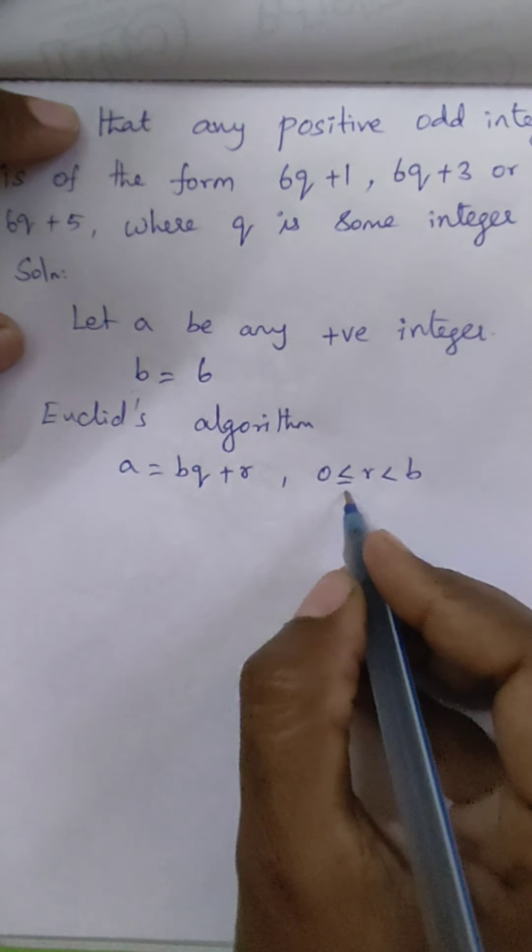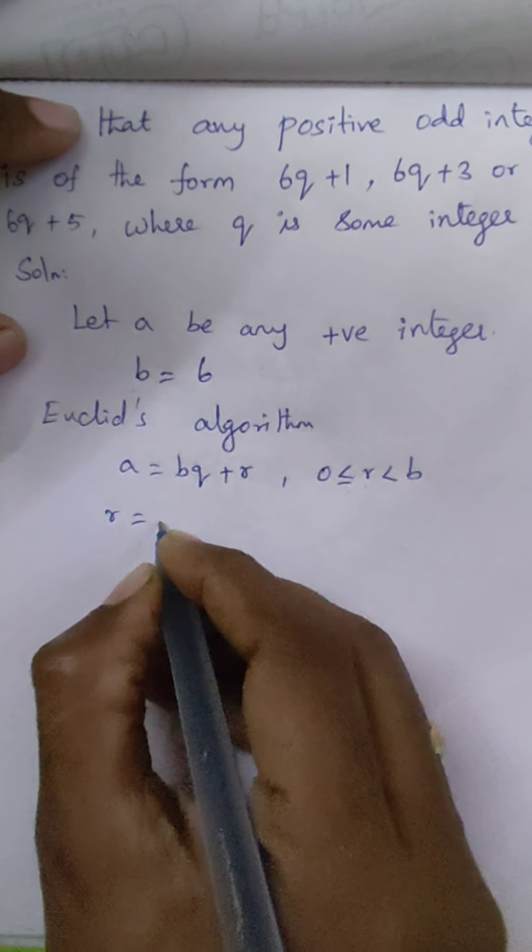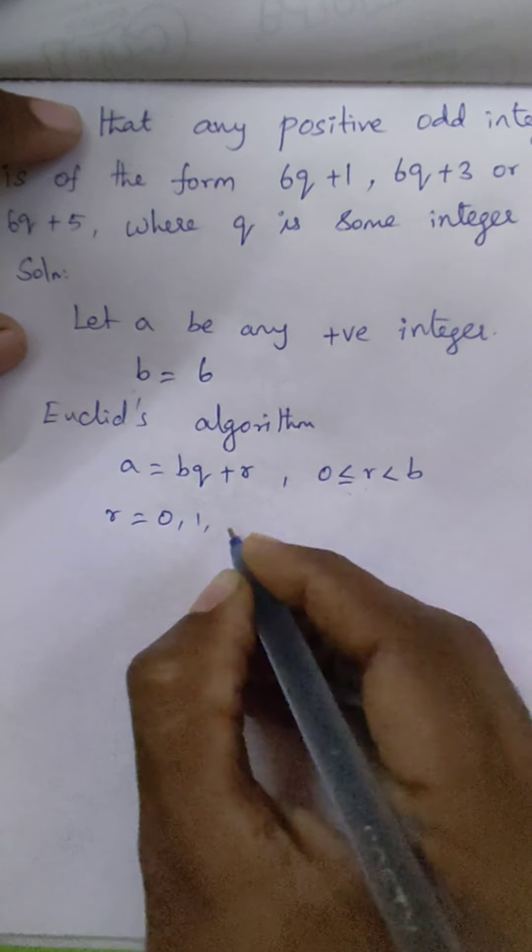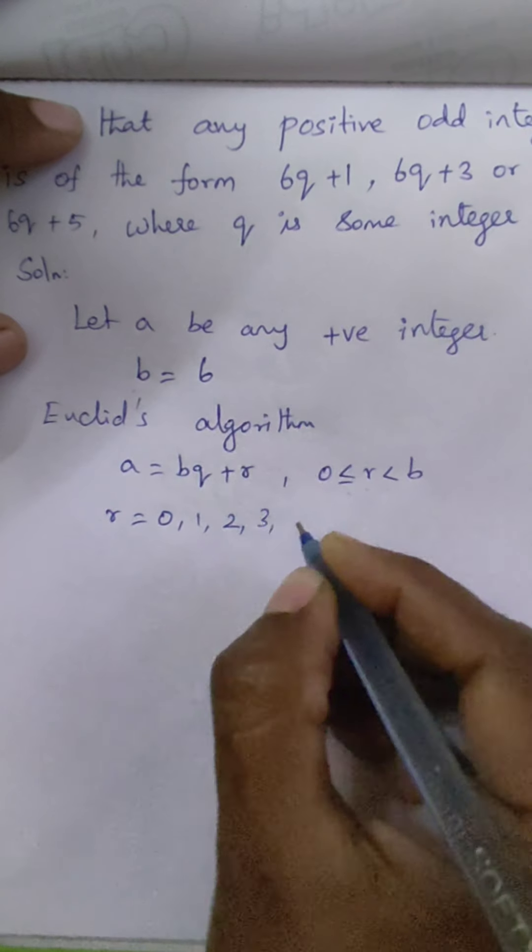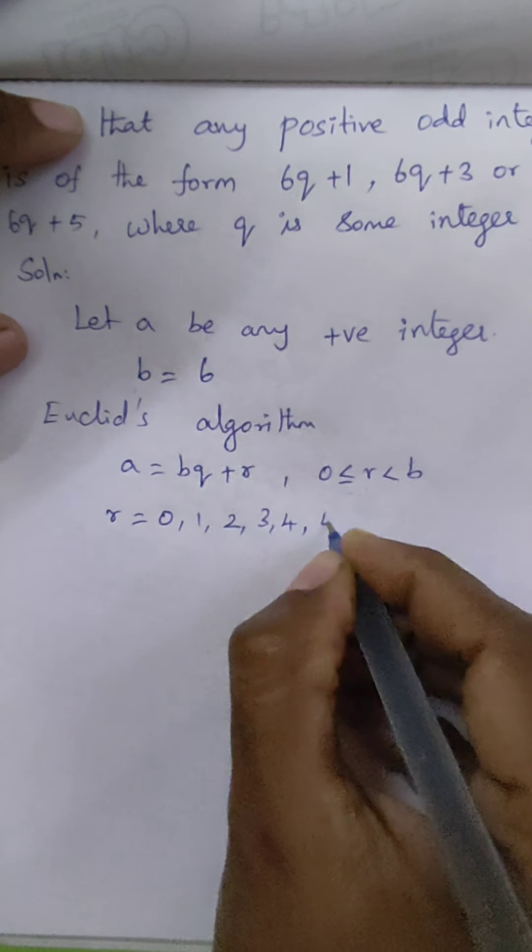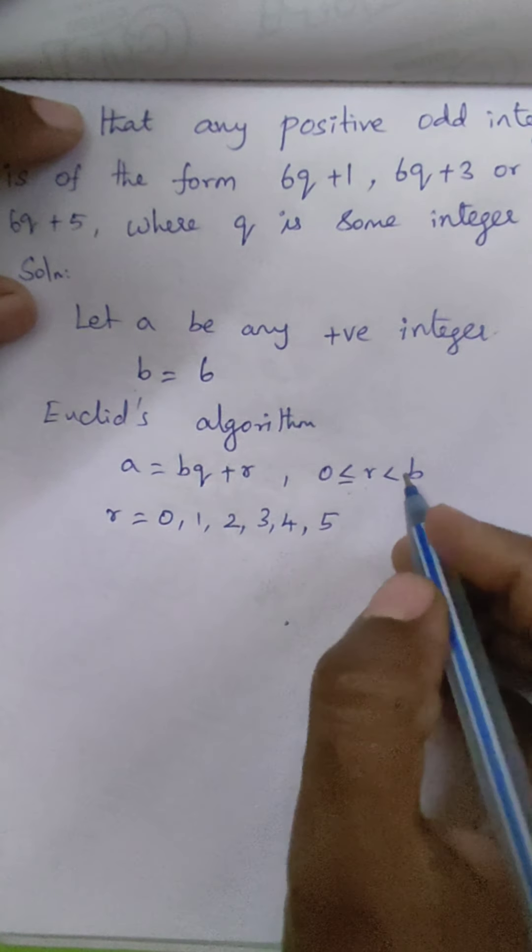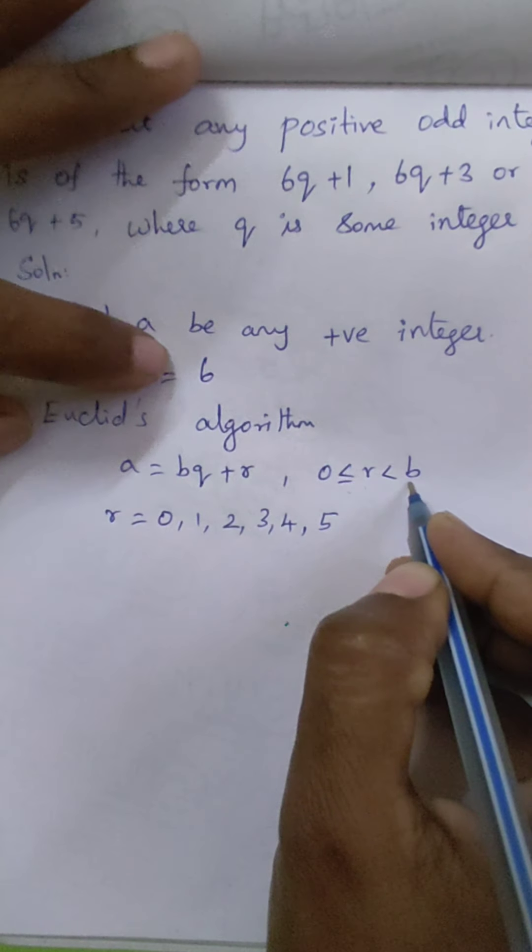So here the r value will be 0, 1, 2, 3, 4, 5. Why? Because our value of b is taken as 6.